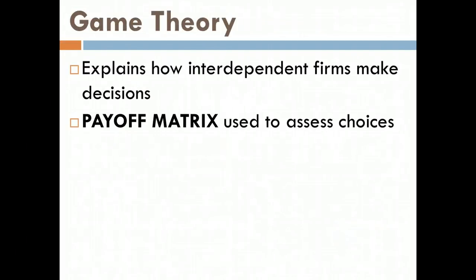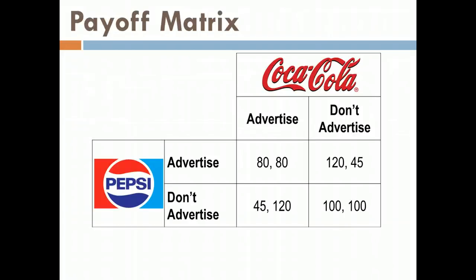So what is a payoff matrix, and what is game theory? Game theory is a way to understand how interdependent firms or people make decisions. Each of us is independent and can make our own decisions, but our decisions can impact others. Game theory helps us sort out what the right action is. The payoff matrix is the setup that tells us what value I receive and what value you receive for the decisions we make.